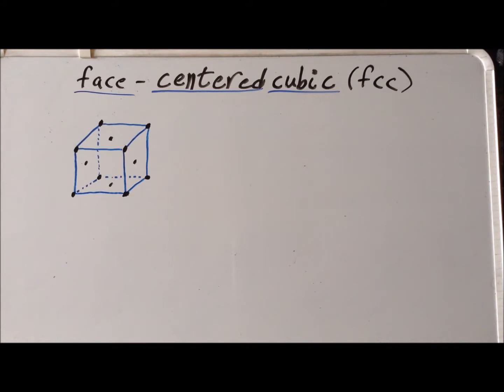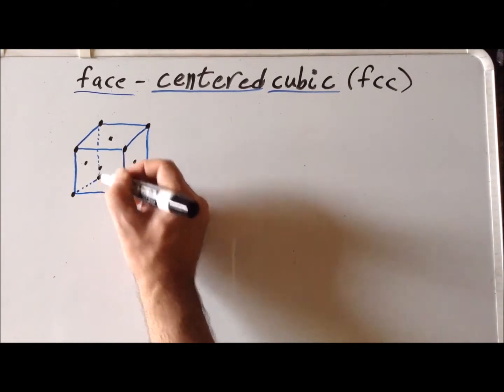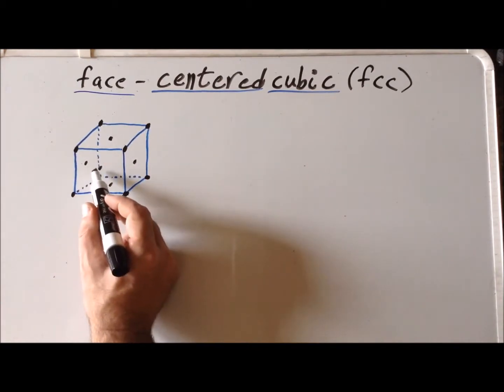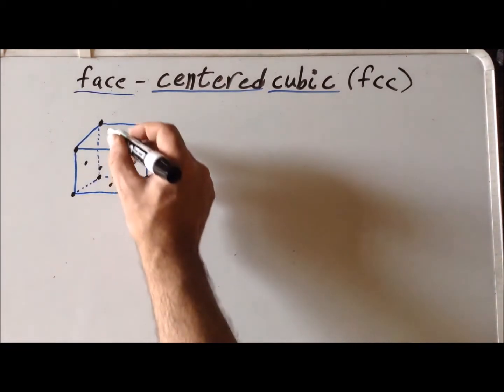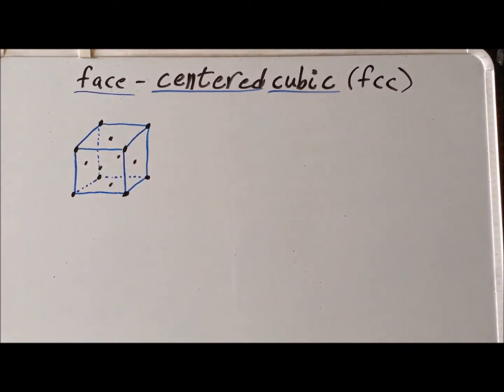We also need atoms at the center of the front and rear face of the cube. So if this is the center of the front cube face, which is a little hard to see, imagine we have this front face and we put an atom exactly at the center, and we put an atom at the center of the rear face. So now we have an atom at the center of each and every face of the cube, as well as at the vertices, and these are all of exactly the same element.